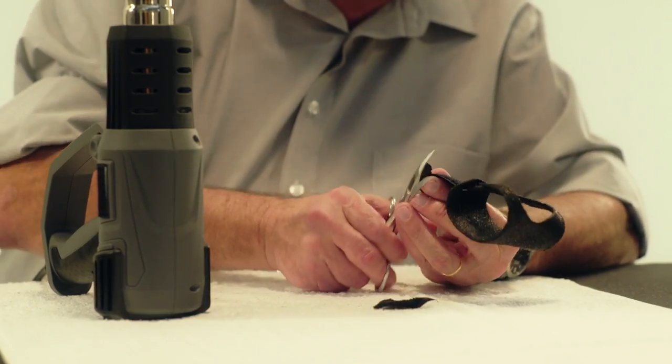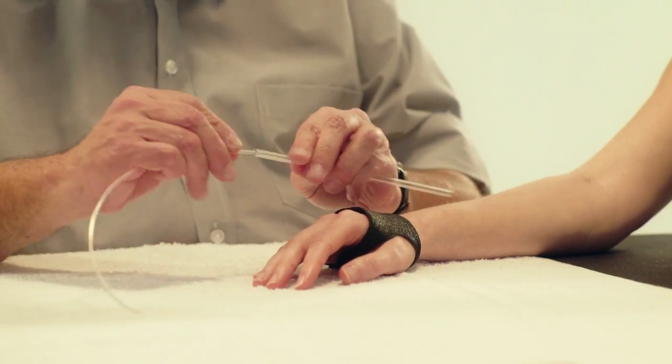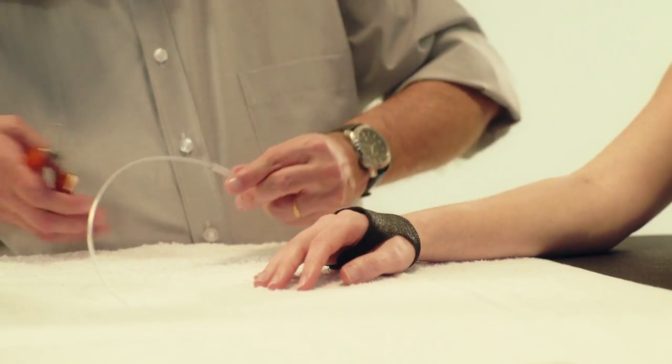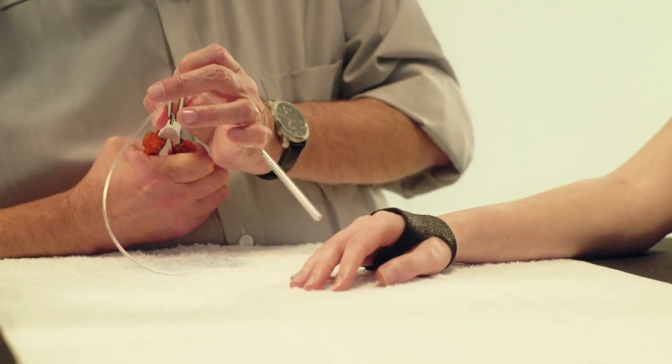We can now begin fabrication of the dynamic portion of the orthosis. Take an Orphi tube and slide the guide inside. Always bend the Orphi tube with the guide so that the hole is maintained.